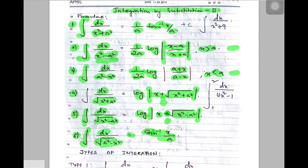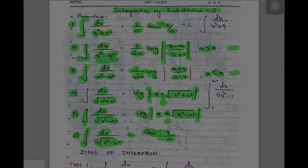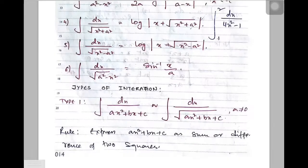There are different types of integration under substitution part 2 that will include these six formulas. The first being type 1, as you can see here. Pause the video and copy this type 1 and the rule — there is type 1 written here and copy the rule as well, along with all these integrals.